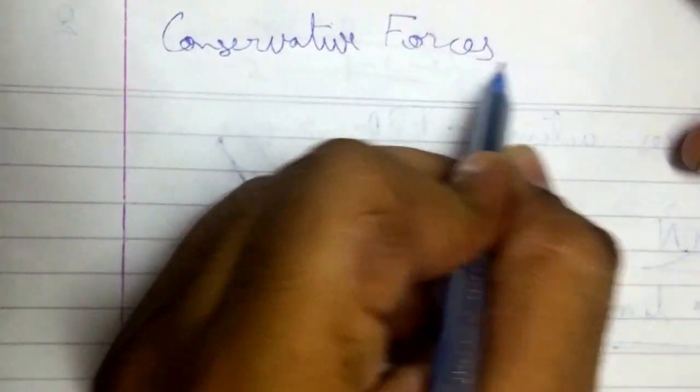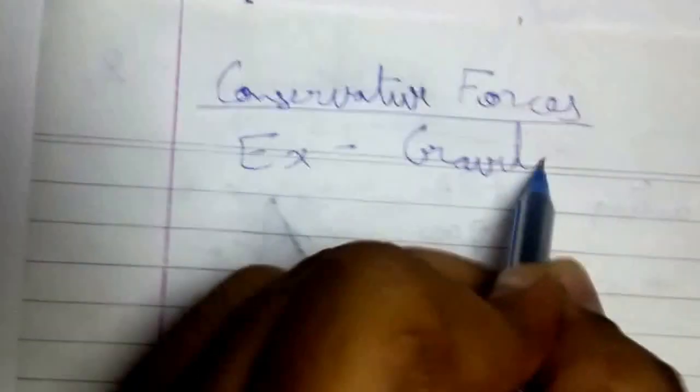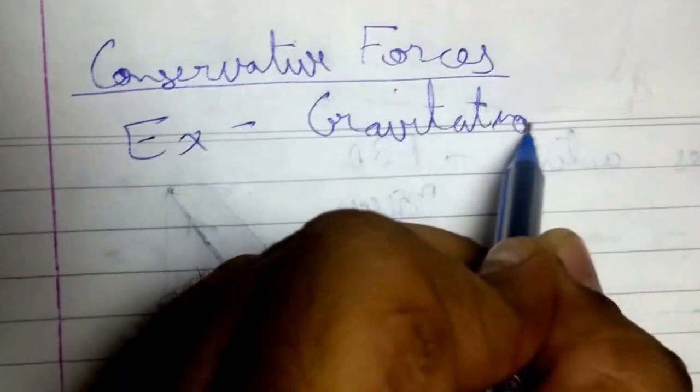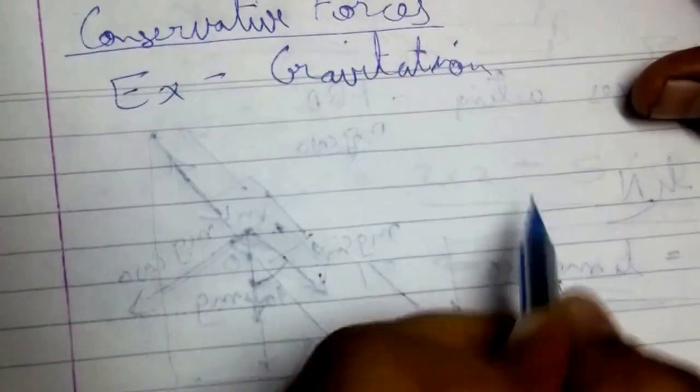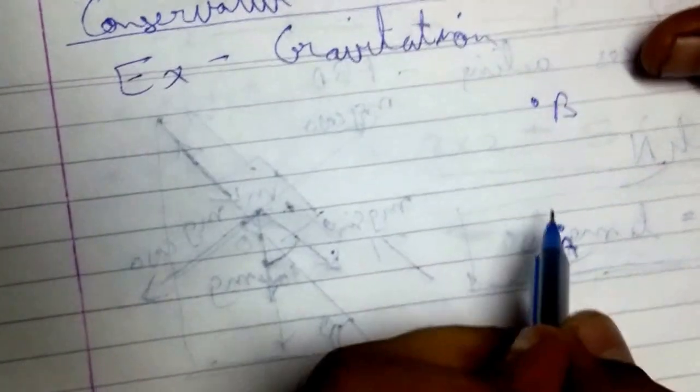Let us now discuss a small concept of conservative forces. Conservative forces, the example is gravitational force, are those forces in which the work done in moving a particle from one position A to another position B